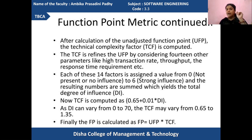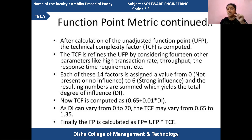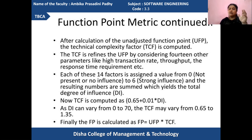Then all those will be computed using a formula that is: 0.65 + 0.01 multiplied with the degree of influence. Then after calculating the TCF, it will be multiplied with UFP in order to calculate the FP (function point).